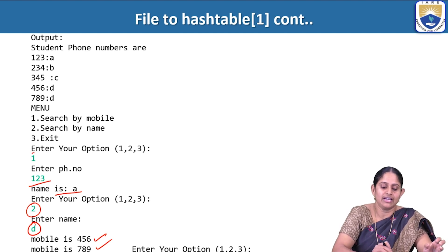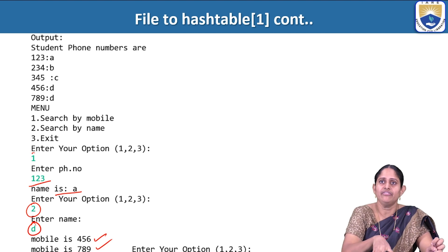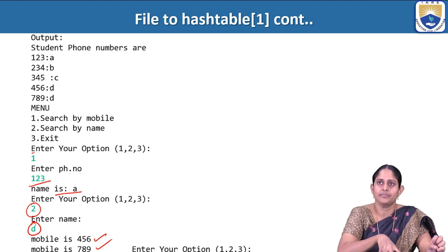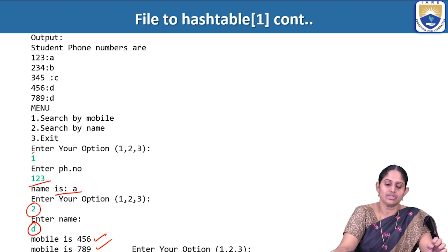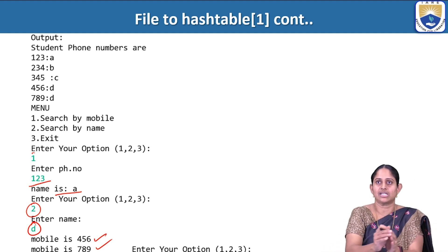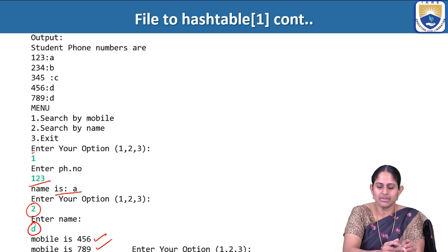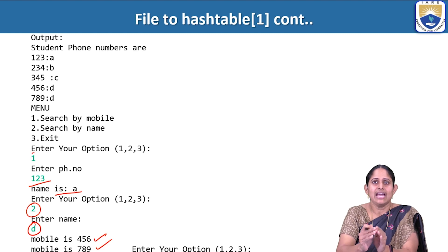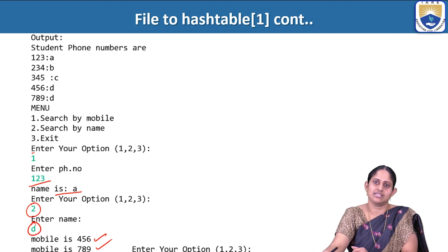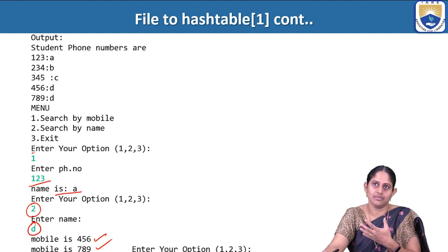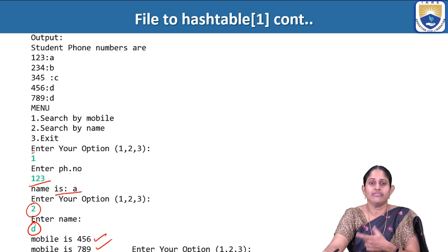To summarize: from the file we store the contents into an array, from that array we store the contents into the hash table, and using the hash table we search contents based on the key or value passed to it.